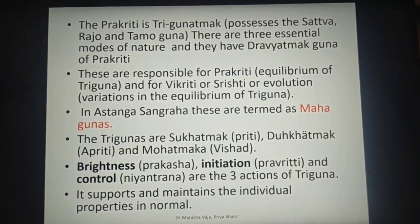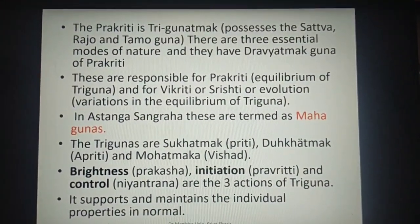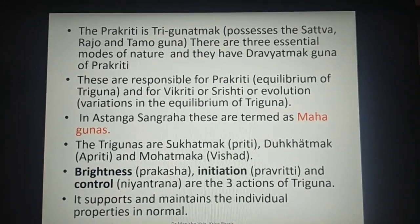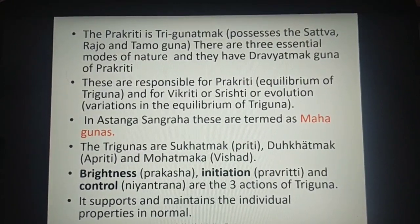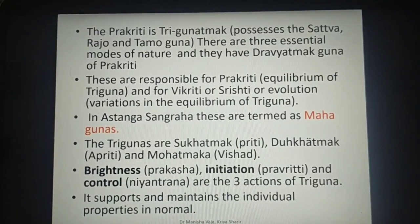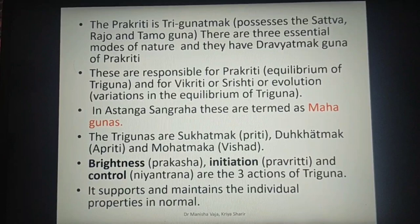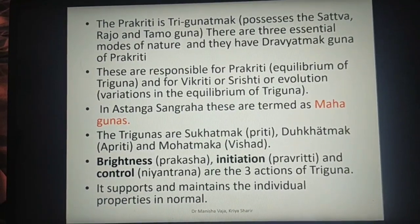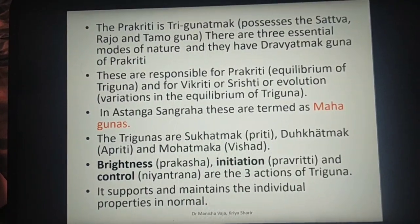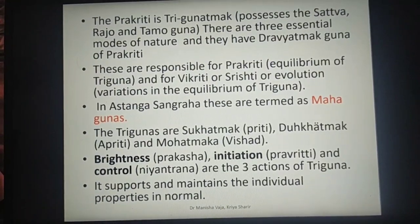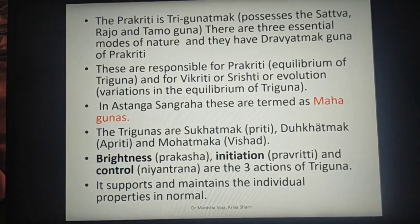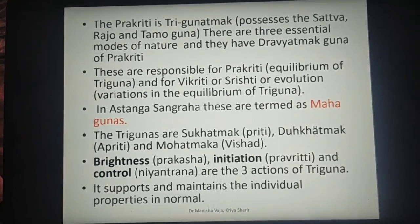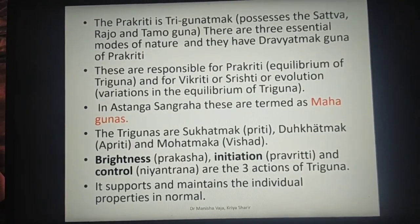Prakruti is Trigunatma — it possesses Sattva, Rajas, and Tamas. These are the three essential modes of nature and they are the Dravyatma Gunas of Prakruti, responsible for the equilibrium of Triguna and for Vikruti or creation. Variation in the equilibrium of Triguna creates Vikruti. In Ashtanga Sangraha, these are termed as Maha Gunas. So if asked in a viva what is Triguna, Maha Guna, or Manas Dosha, the answer would be the same: Sattva, Rajas, and Tamas.